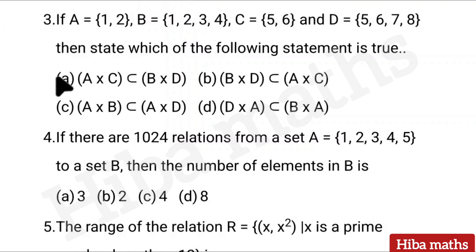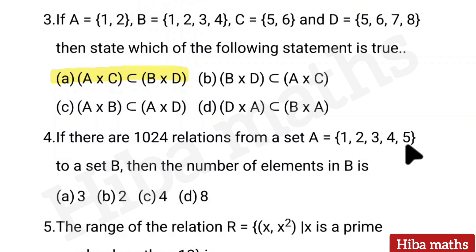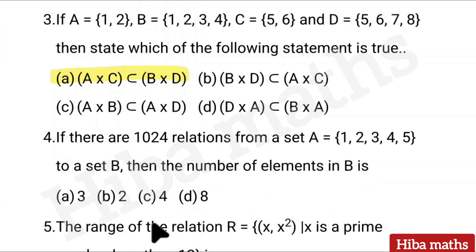Option A is correct for the third question. Fourth question: If there are 1024 relations from a set A equal to {1, 2, 3, 4, 5} to a set B, then the number of elements in B is — options are 3, 2, 4, 8.